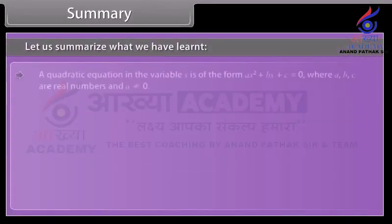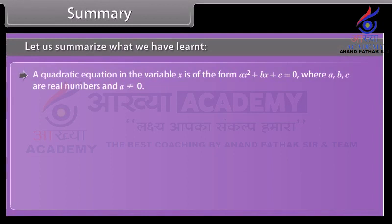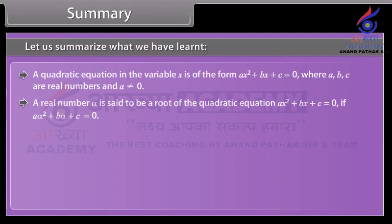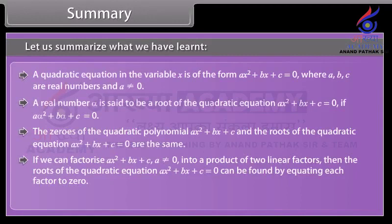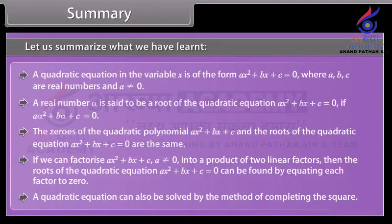Let us summarize what we have learned. A quadratic equation in the variable x is of the form ax squared plus bx plus c equals zero, where a, b, c are real numbers and a is not equal to zero. A real number alpha is said to be a root if a·alpha squared plus b·alpha plus c equals zero. The zeros of the quadratic polynomial ax squared plus bx plus c and the roots of the corresponding quadratic equation are the same. If we can factorize ax squared plus bx plus c into a product of two linear factors, then the roots can be found from those factors. A quadratic equation can also be solved by the method of completing the square.